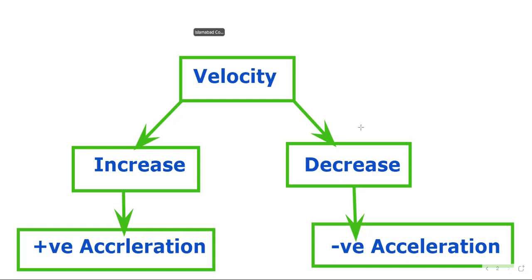To summarize: change in velocity is called acceleration. If the velocity is increased, such acceleration is called positive acceleration. If there is a decrease in velocity, it is called negative acceleration. This is the summary of our discussion.